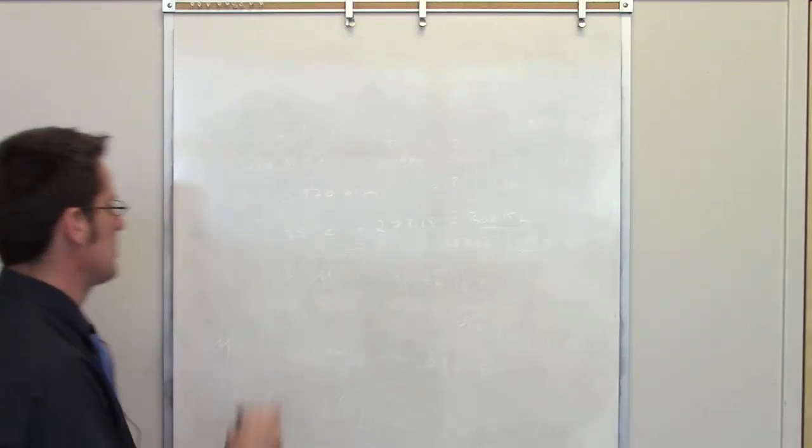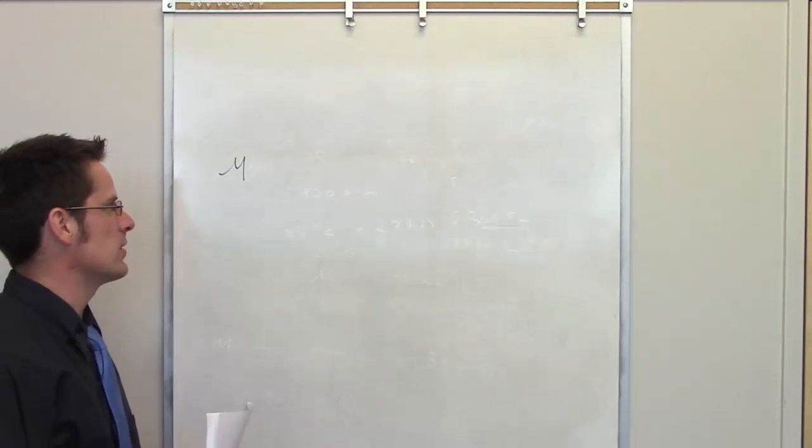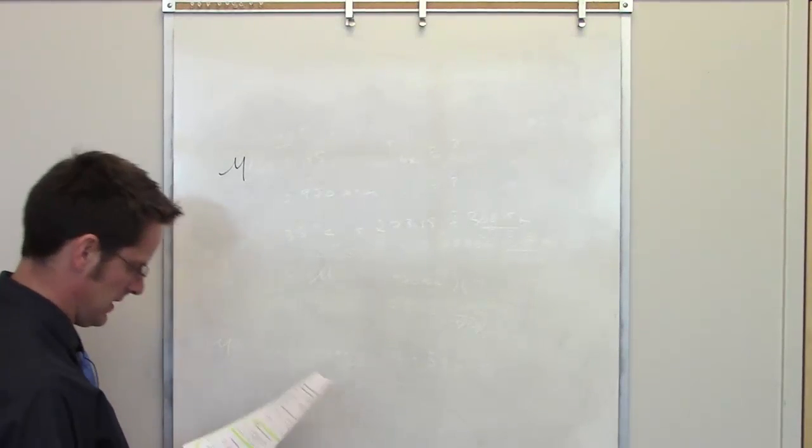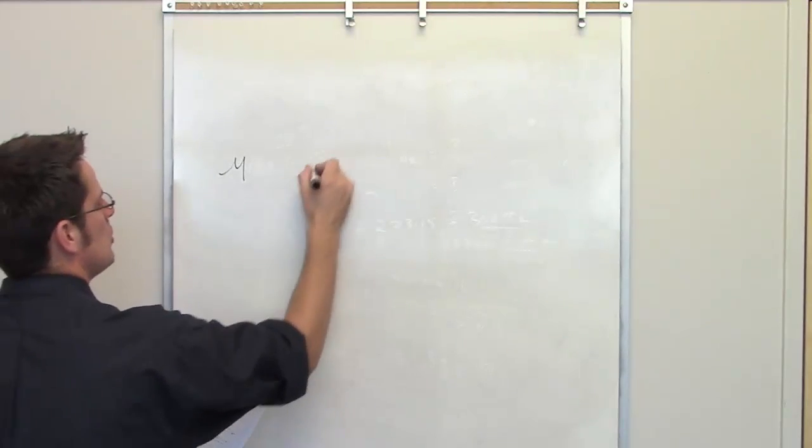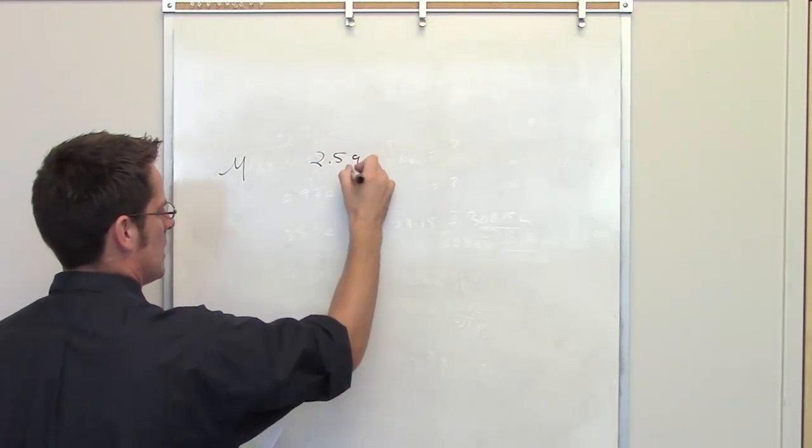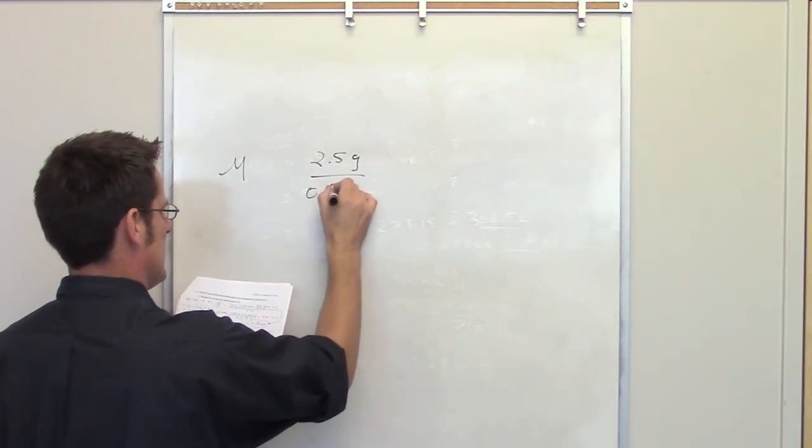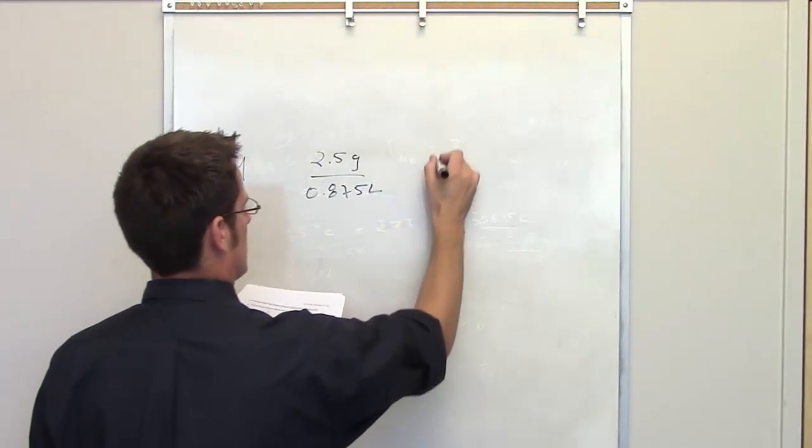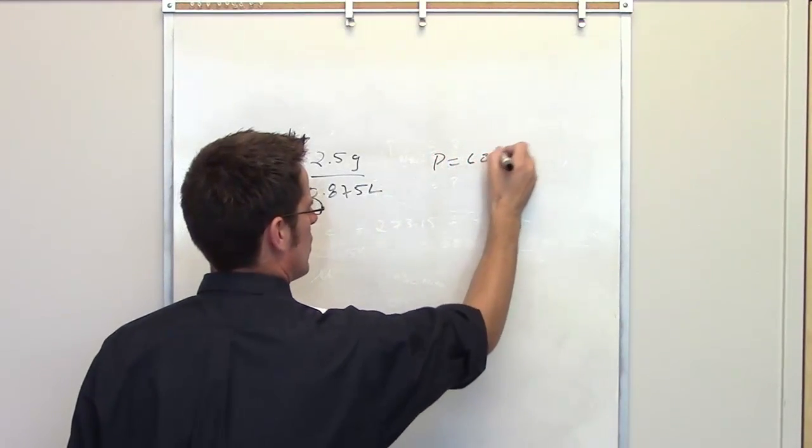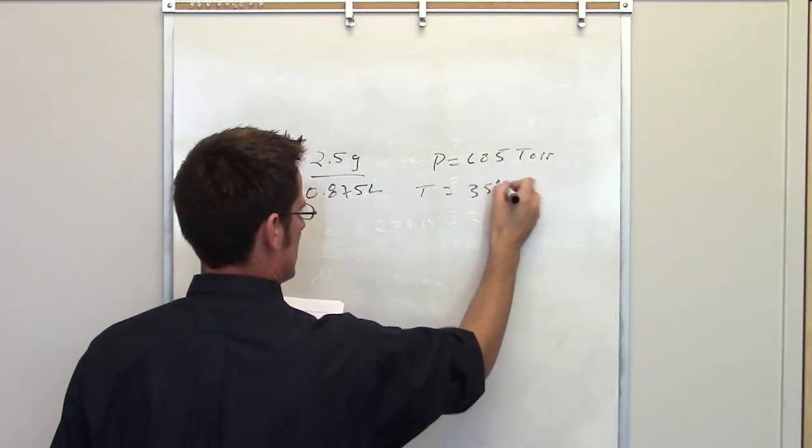Part B of this problem asks me to calculate the molar mass, which is once again abbreviated by this fancy letter M. It's like a capital Mu or something like that. If 2.5 grams of it occupies 0.875 liters at a pressure of 685 torr and a temperature of 35 degrees Celsius.